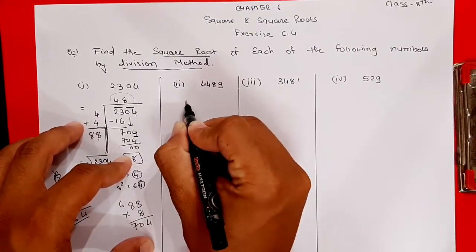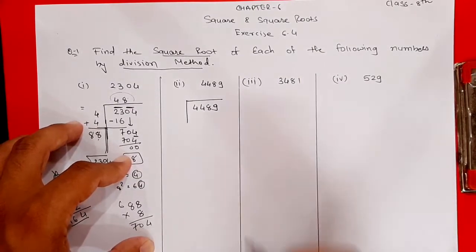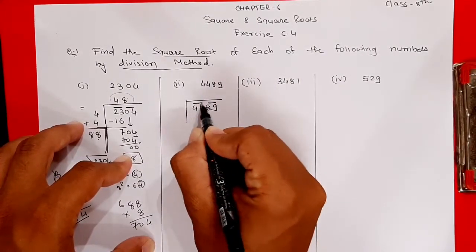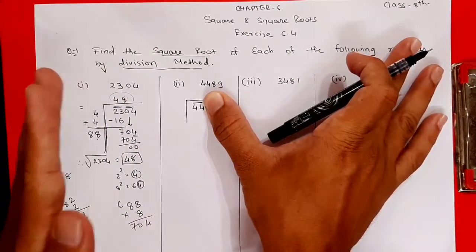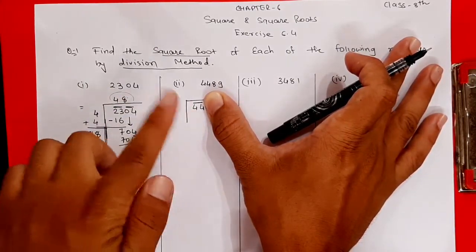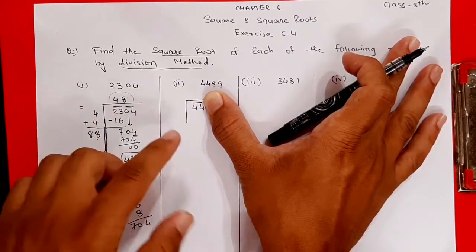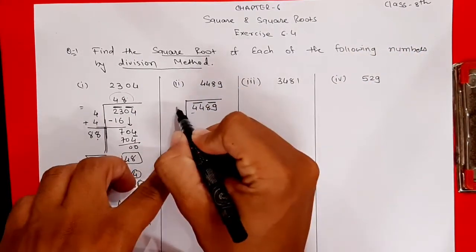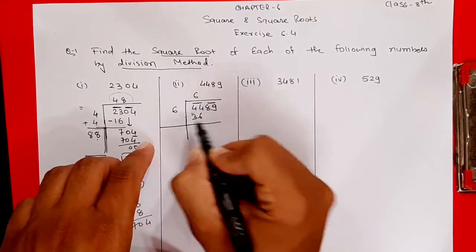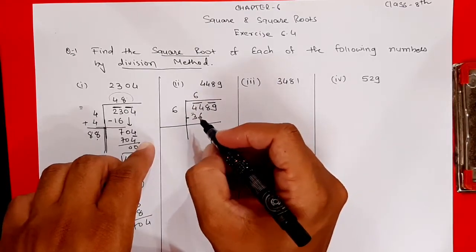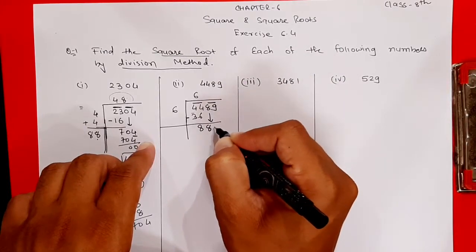First write the number 4489 as it is. Make groups of two digits from the back. Here we have formed the groups. Now for the first group, say squares: 5²=25, 6²=36, 7²=49 — 49 is larger than 44, so take 6². Six sixes are 36. Subtract 36 from 44, you get 8. Bring down the next group: 89 comes down.